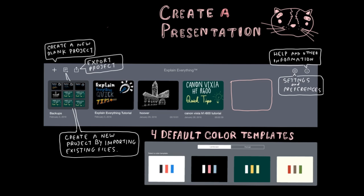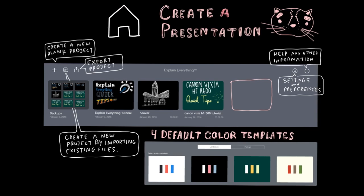To get us started, open the Explain Everything app and you will be taken to the main home screen. All projects you create will be housed here. Touch the plus sign in the upper left-hand corner to create a new blank project.